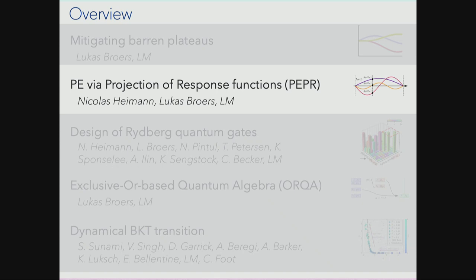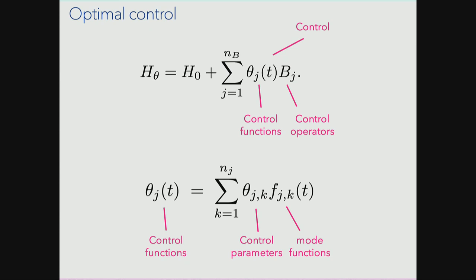Now let's remind ourselves of properties of optimal control with the purpose of achieving high fidelity of a given quantum transformation. A typical setup: your Hamiltonian contains a non-controllable part and control terms composed of control functions and control operators B_j. The control function is broken up into control parameters — prefactors — and mode functions, such as the stepwise parametrization or Fourier sine functions; really any type of expansion can be used. A typical optimization task: choose an initial state at time zero, propagate it in time, compare with the target state by applying the target operation and taking the fidelity, then optimize iteratively.